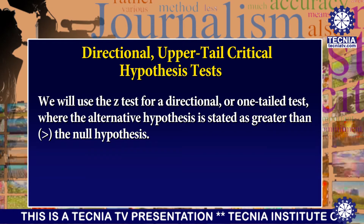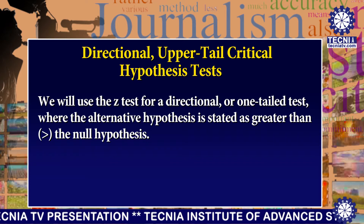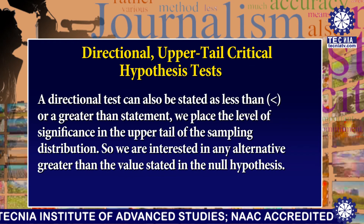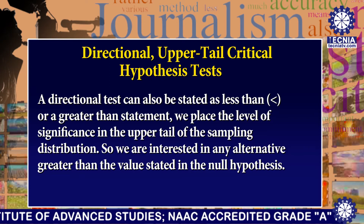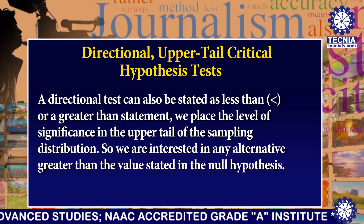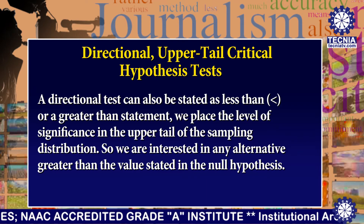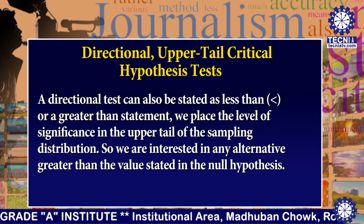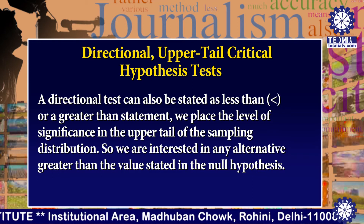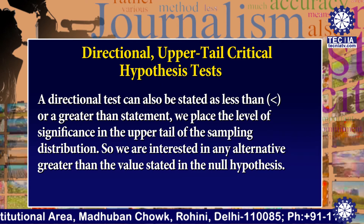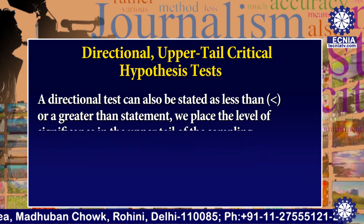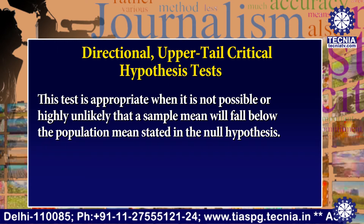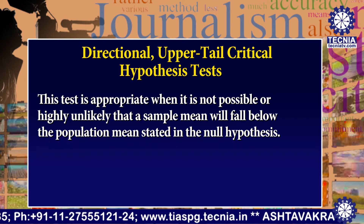Here we will use the Z test for a directional or one-tail test where the alternative hypothesis is stated as greater than the null hypothesis. A directional test can also be stated as less than the null hypothesis. For an upper tail critical test, or a greater than statement, we place the level of significance in the upper tail of the sampling distribution. We are interested in any alternative greater than the value stated in the null hypothesis. This test is appropriate when it is not possible or highly unlikely that a sample mean will fall below the population mean stated in the null hypothesis.